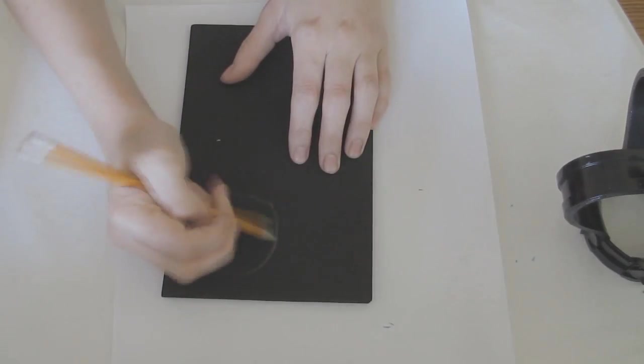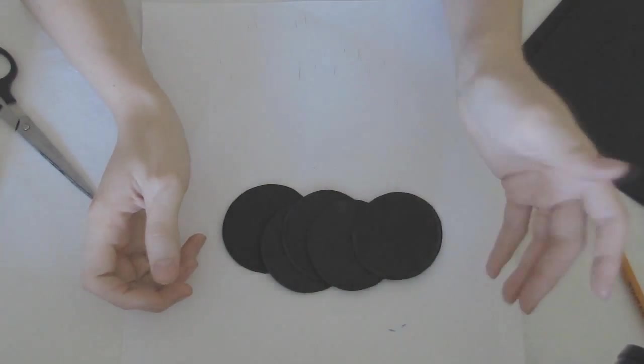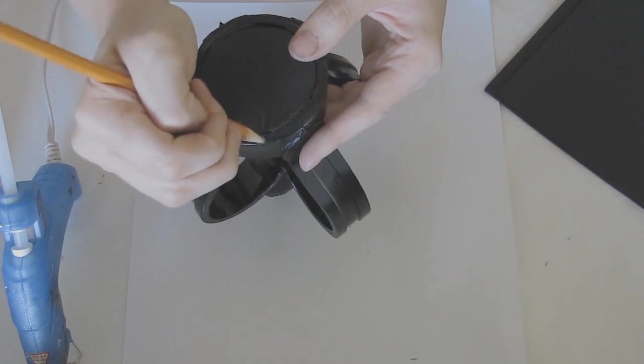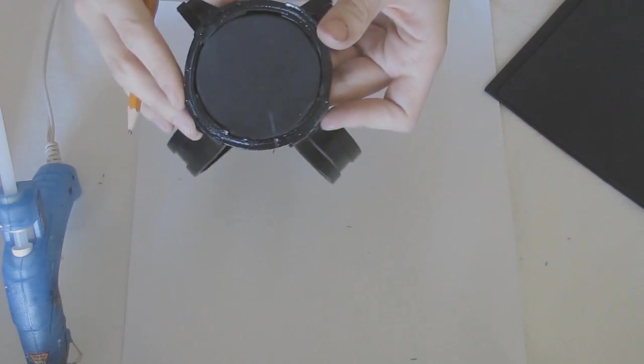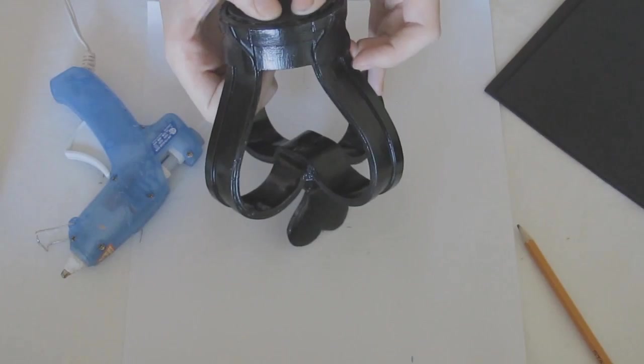You can create this crown with or without a base depending on what you're using it for, but for mine I just layered five circles of craft foam together and then found out where they fit best in the lower ring and secured them with hot glue.